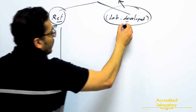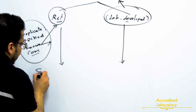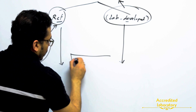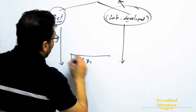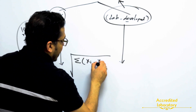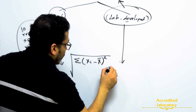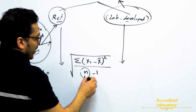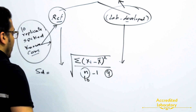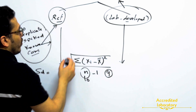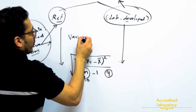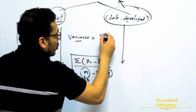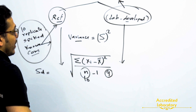These 10 replicates will be analyzed by the reference method and also by the lab-developed method. You will get the results from the instrument. Then you will calculate the standard deviation for each group, which is equal to the square root of the summation of each individual result minus the average, divided by n minus one — the degree of freedom — where n is 10, so equal to 9. Then you will calculate the variance for each group, which is equal to the square of the standard deviation.